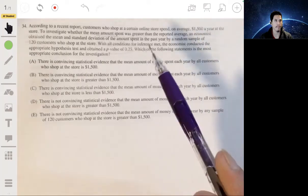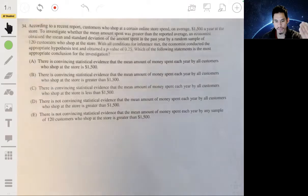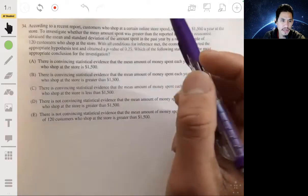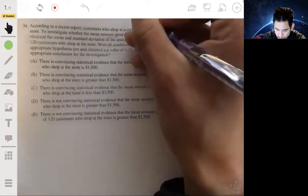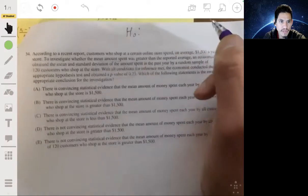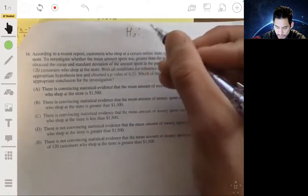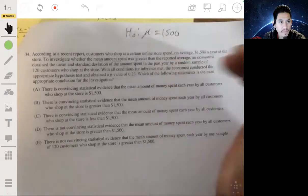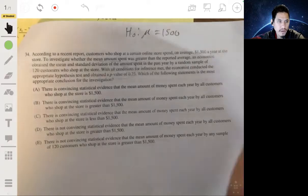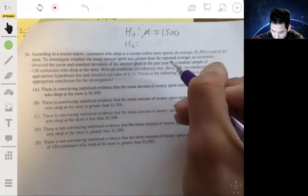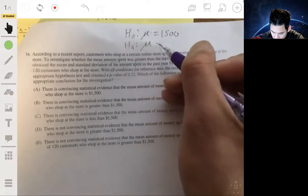Okay, so remember the p-value is basically the probability that you would get results as extreme or more extreme if we assume that the null hypothesis were true. So in this example, the null hypothesis H0 would be that the mean is $1,500. The true population mean is $1,500. Now, the alternative is that the mean amount spent is going to be greater than $1,500.